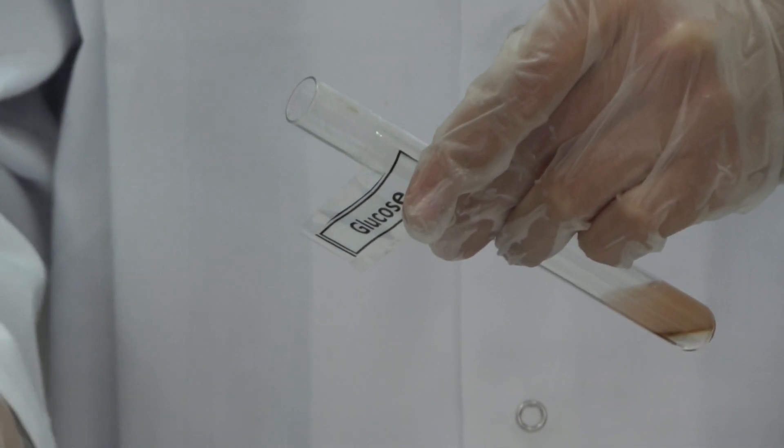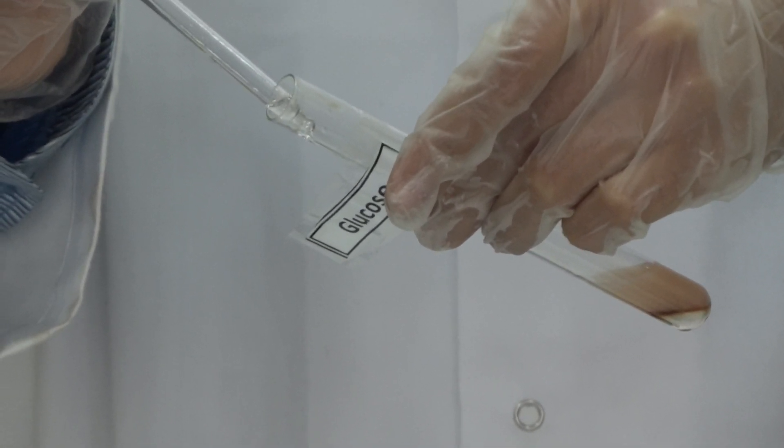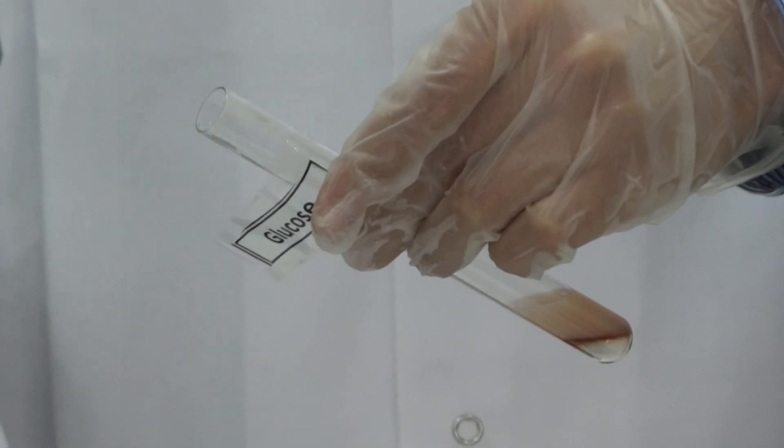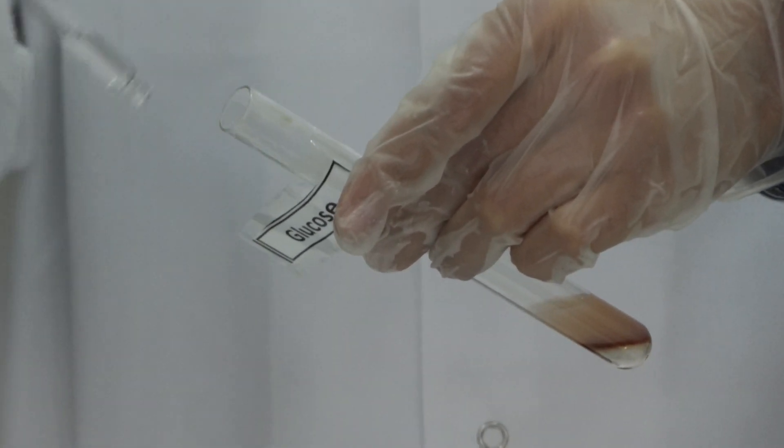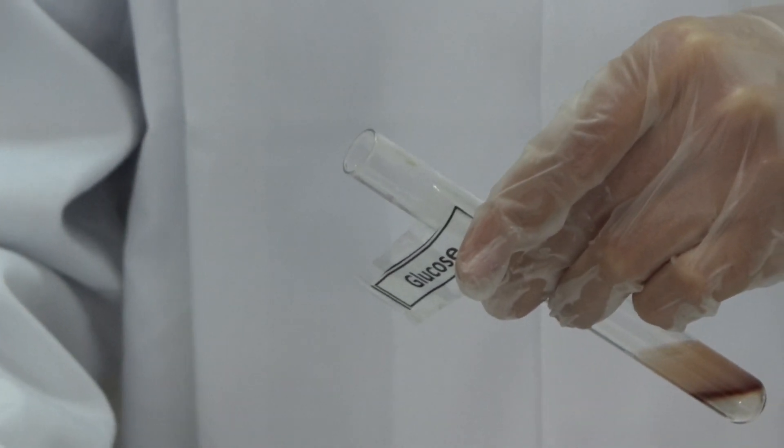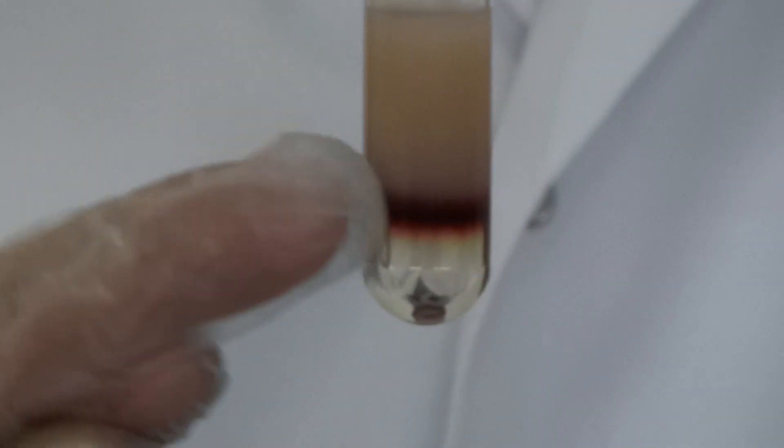Now, let's concentrate the sulfuric acid, so you can see clearly the violet ring. That's the one, and then, perfect. Now, slowly. What can you see? Violet ring at interface. Can you see it? Very clear. This is what you should get if you have a carbohydrate.